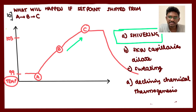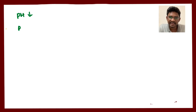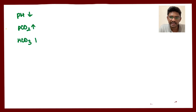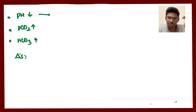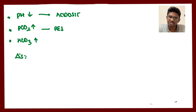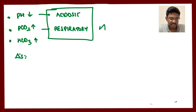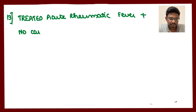An ABG question: pH is low, pCO2 is high, and bicarbonate is high. Low pH indicates acidosis; high pCO2 means elevated carbonic acid — the diagnosis is respiratory acidosis.